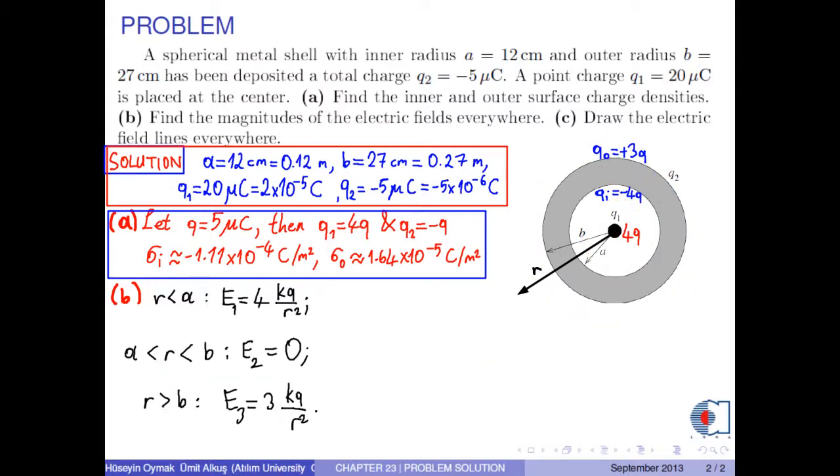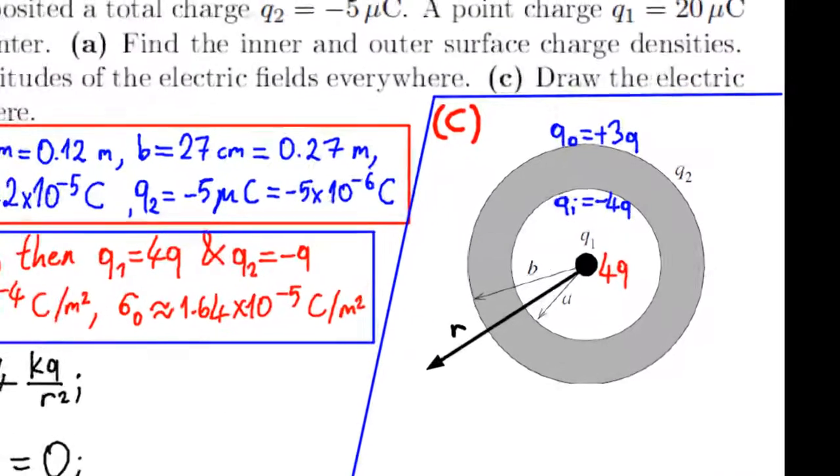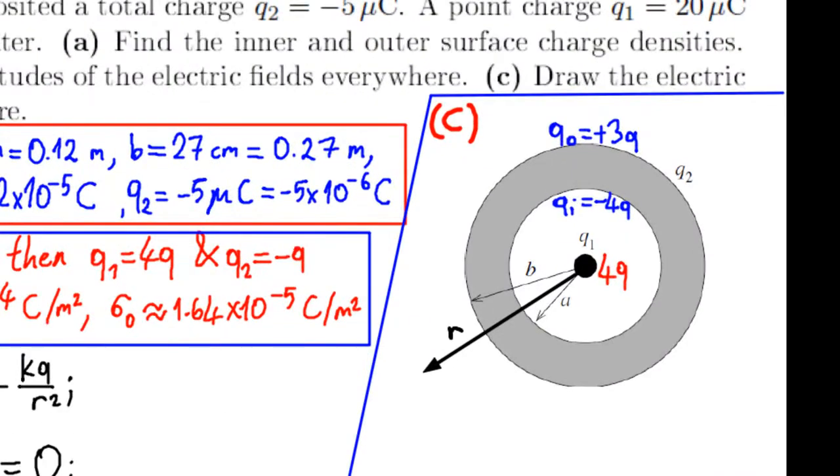Part C: draw the electric field lines everywhere. In the first region, we have point-like charge 4Q. Therefore, the electric field lines are drawn radially outward.